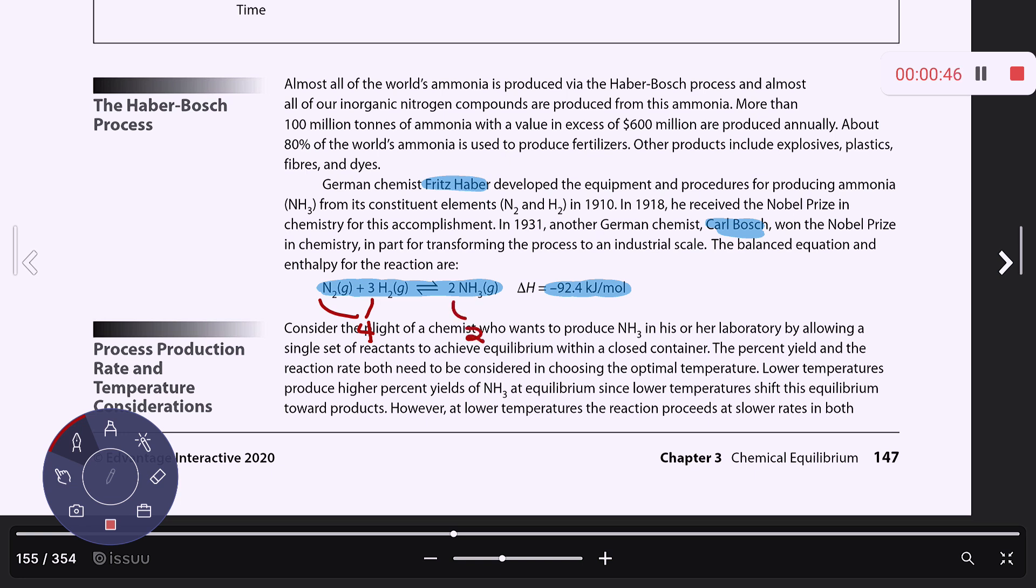In terms of how volume, pressure, and temperature will affect the production of ammonia, if this is an exothermic process, would I want to increase or decrease the heat to shift to the right? Decrease.